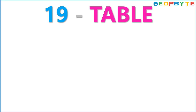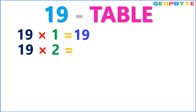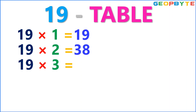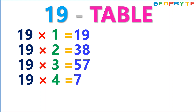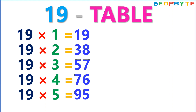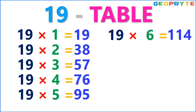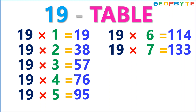Now, let us see the 19 table. 19 ones are 19. 19 twos are 38. 19 threes are 57. 19 fours are 76. 19 fives are 95. 19 sixes are 114. 19 sevens are 133.